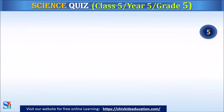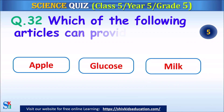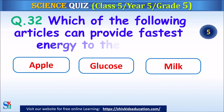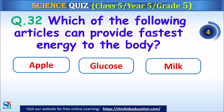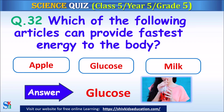Question 32: Which of the following articles can provide fastest energy to the body? Apple, glucose or milk? The answer is glucose.